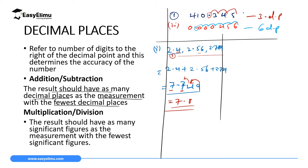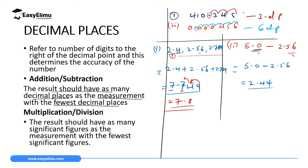For subtraction, if we have 5.0 minus 2.56, the result must have the number of decimal places of the number with the fewest — 5.0 has one decimal place and 2.56 has two. So the result should have one decimal place. We subtract to get 2.44. Since the second decimal digit, 4, is less than 5, we discard it, and our answer is 2.4. This is very important in science.